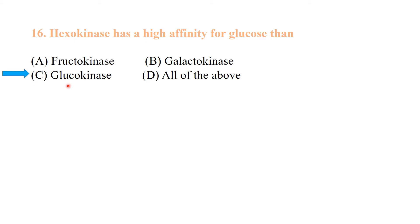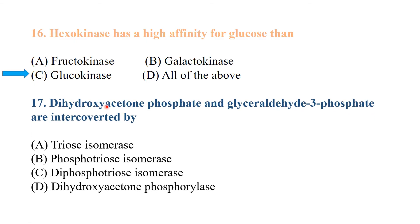Dihydroxyacetone phosphate (DHAP) and glyceraldehyde-3-phosphate are interconverted by the enzyme phosphotriose isomerase. Phosphotriose isomerase converts dihydroxyacetone phosphate to glyceraldehyde-3-phosphate, which then moves further in the process of glycolysis.